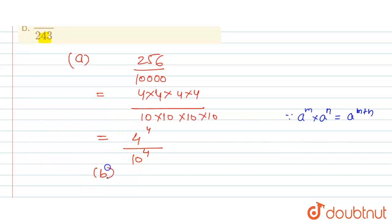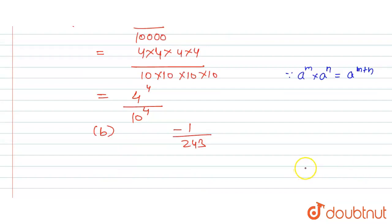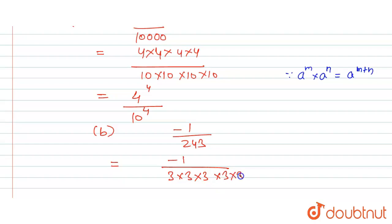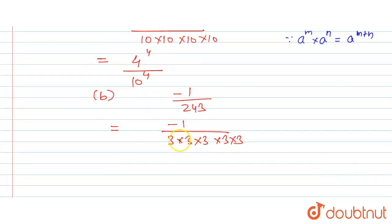Now for part B: minus 1 upon 243. How can we write 243? It is a multiple of 3 × 3 × 3 × 3 × 3. So we write minus 1 upon 3 × 3 × 3 × 3 × 3.